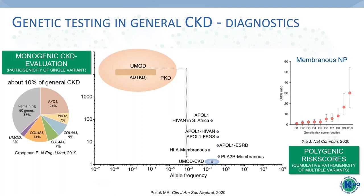For monogenic CKD evaluation, single variants harbor a significant pathogenic effect. From the landmark study by Grubman and Gauravi from 2019, about 10% of the adult CKD population harbors a monogenic or Mendelian kidney disease. In this pie chart, the six most common affected genes are shown: PKD1/2 accounting for ADPKD, collagen IV genes A3 to A5, UMOD associated with ADTKD, and in the gray portion of the pie chart, at least 60 remaining genes with rare kidney diseases.